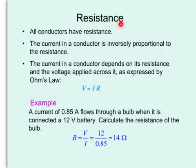Resistance. All conductors have resistance. The current in the conductor is inversely proportional to the resistance. That means, if the current is halved, then the resistance is doubled, and vice versa.